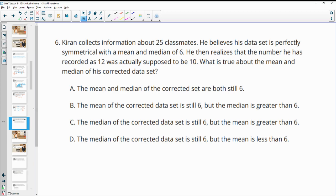Number six, Kieran collects information about 25 classmates. He believes his data set is perfectly symmetrical with a mean and median of 6. He then realizes that the number he has recorded as 12 was actually supposed to be 10. What is true about the mean and median of his corrected set of data?